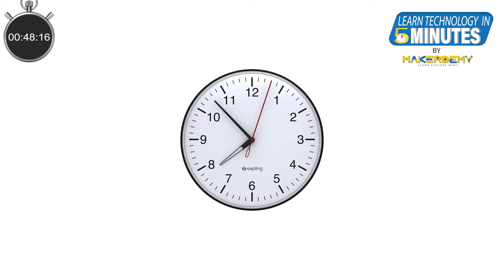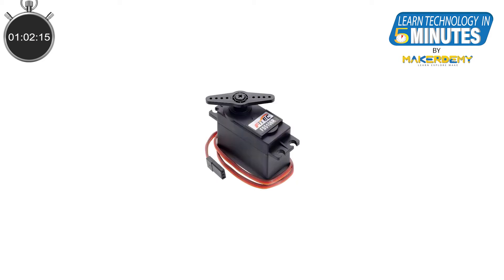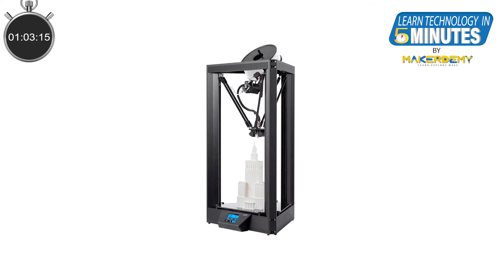Finally, with the inputs read and the decisions made by the software, the computer must do something. For that, it needs output devices — the things that transfer from software to the real world. These can be as simple as an LED, a servo, or even a mechanism of a 3D printer.